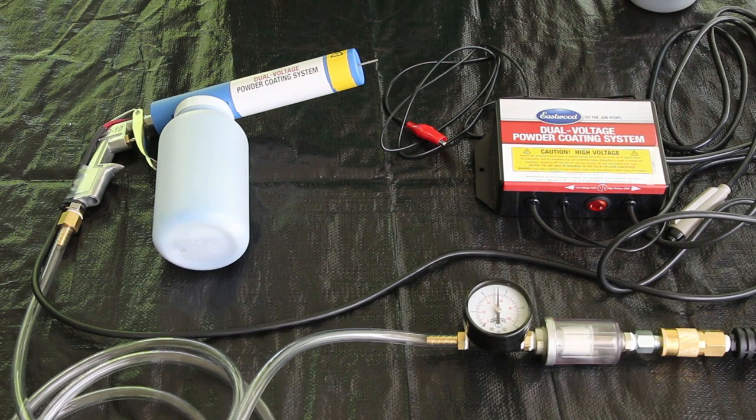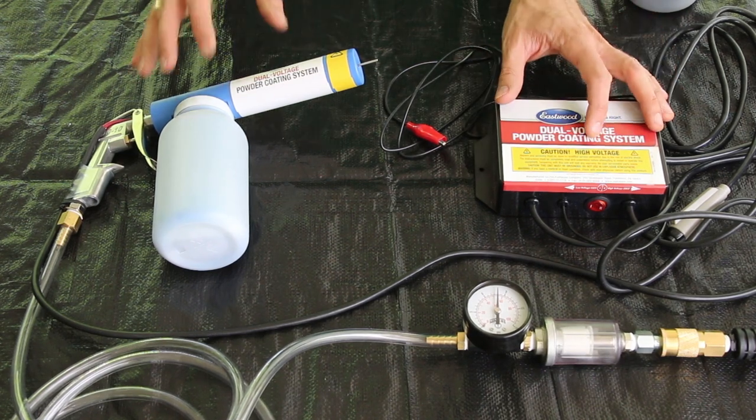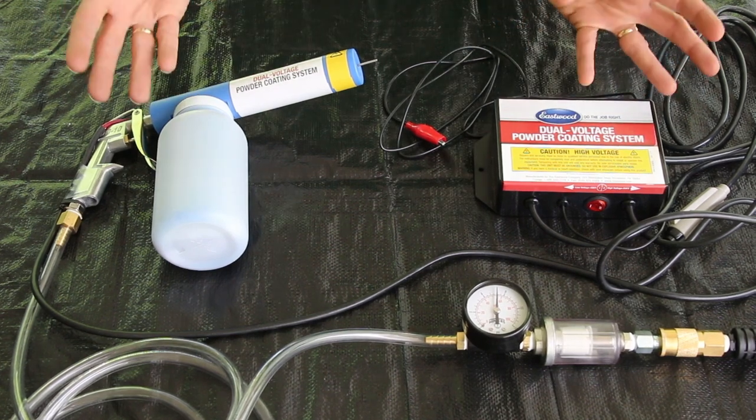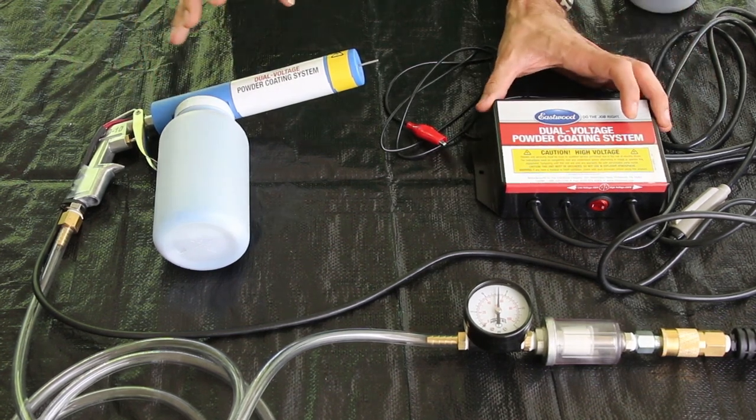Here's the equipment I use to do powder coating. I have a powder coating gun made by Eastwood Company. I have no affiliation with them; this is just the one I bought and it seems to be a pretty popular one.